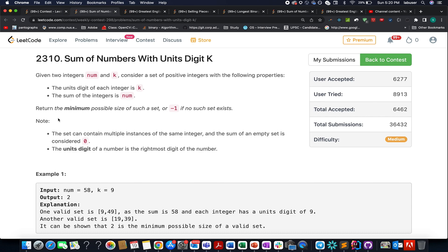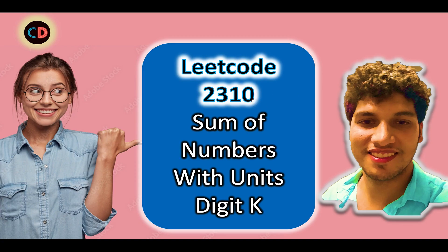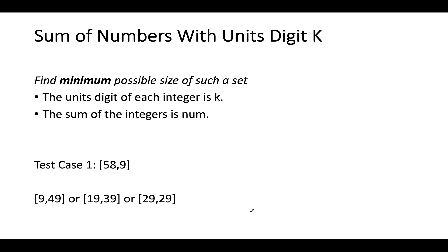Let's get started with understanding the question. LeetCode 2310: Sum of Numbers with Unit Digit K. The first test case has a total sum equal to 58 and the value of K is 9. K lies in the range 0 to 9. The first possibility is 9 and 49, the second is 19 and 39, the third is 29 and 29. In each case, the unit digit is 9 and the sum is 58.